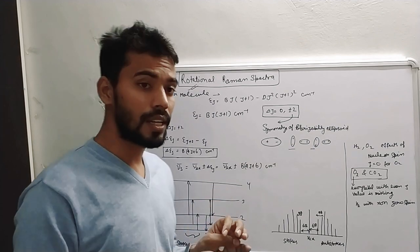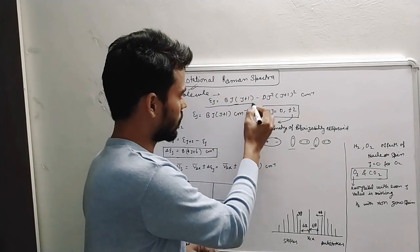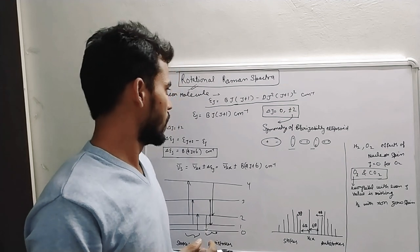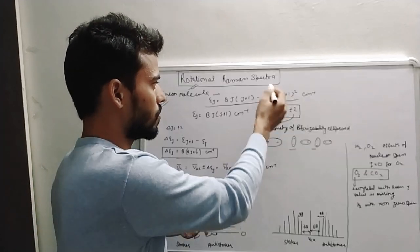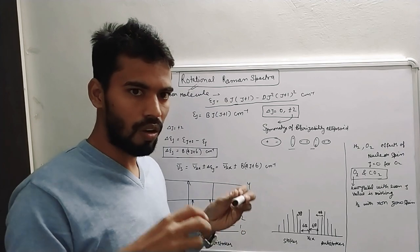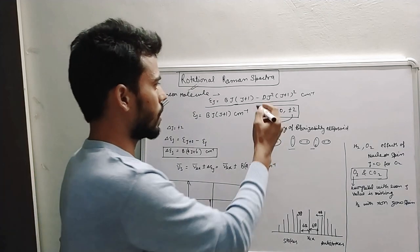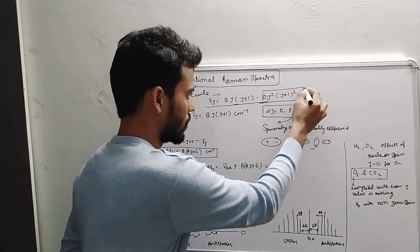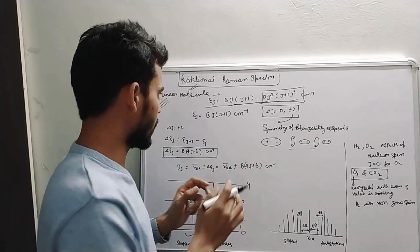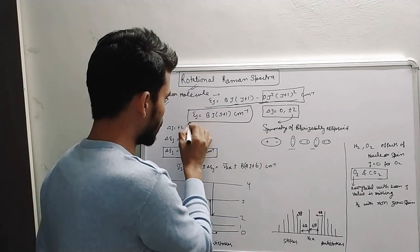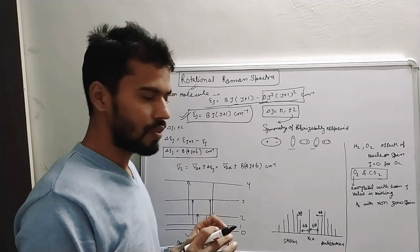As I previously discussed, the energy of a non-rigid diatomic molecule is E_J = BJ(J+1) − DJ²(J+1)² cm⁻¹. In the case of rotational Raman spectra, the centrifugal distortion constant D is not very significant, so it has been neglected. Therefore, the energy for rotational Raman spectra simplifies to E_J = BJ(J+1) cm⁻¹. This is the energy for a linear diatomic molecule which is Raman active.